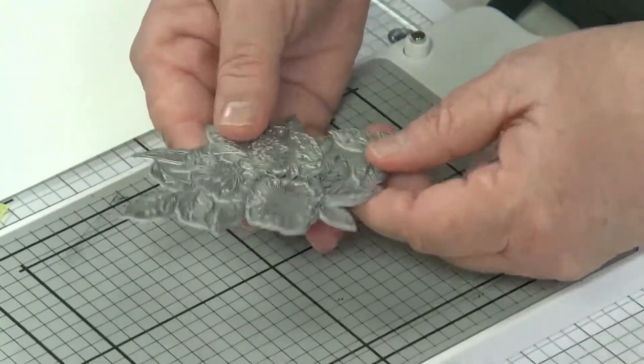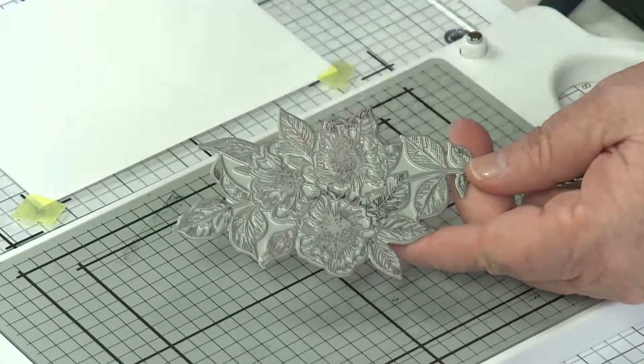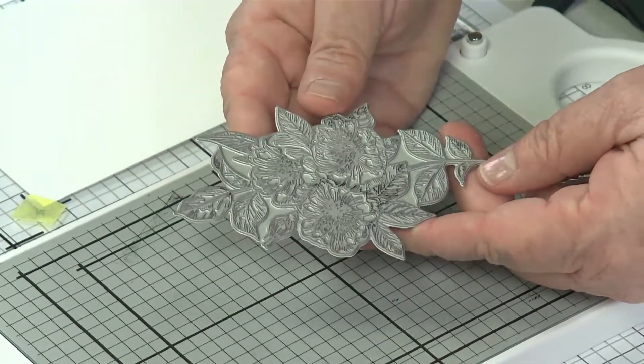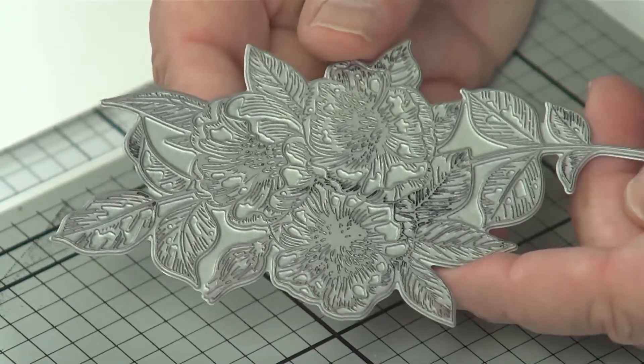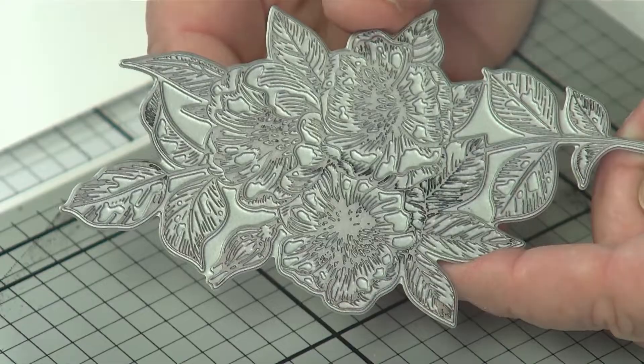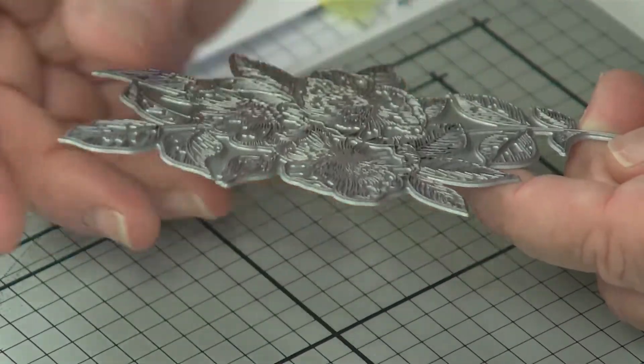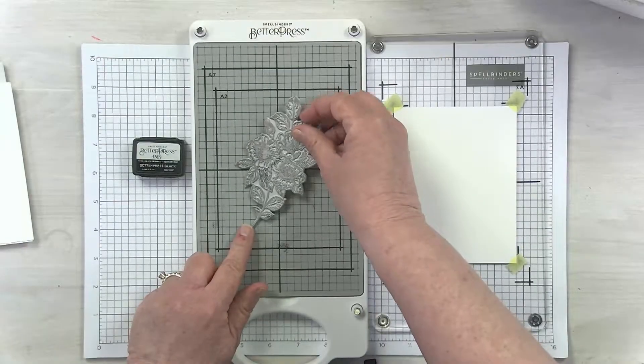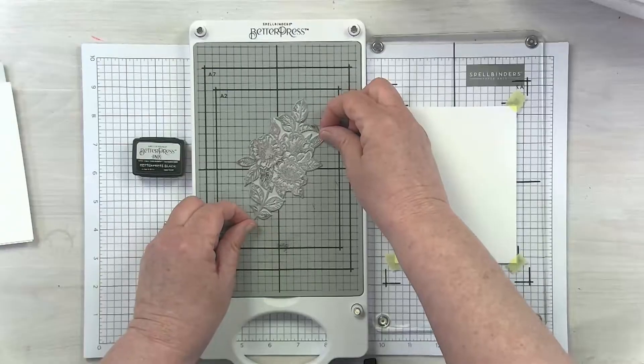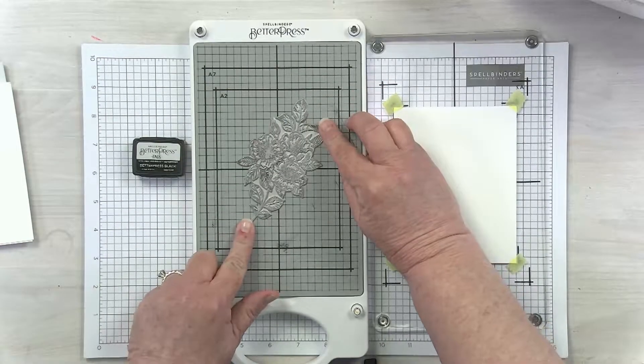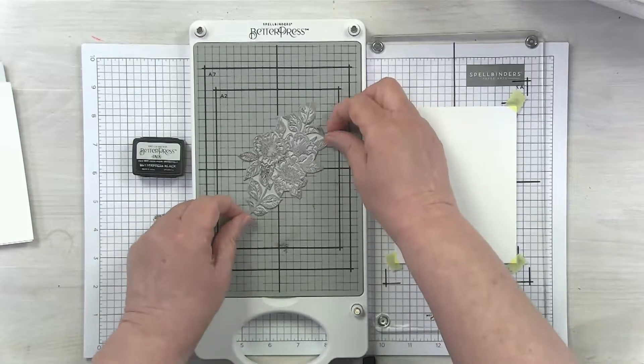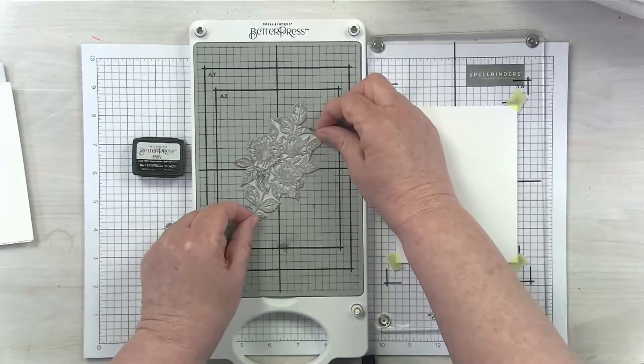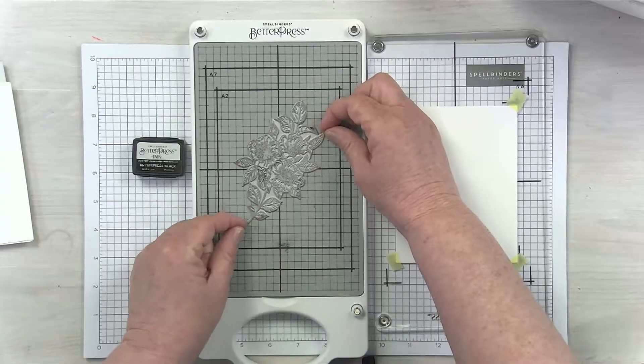You'll see that these plates are a little different. We're going to have a separate video talking about why they're different and what you can do with them. The first thing you'll notice is they're not your classic Spellbinders color plate. We did that on purpose. These are a different color plate because they're for different use. This is our Better Press plate. Beautiful detail on these. I think you're going to love it.